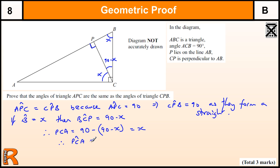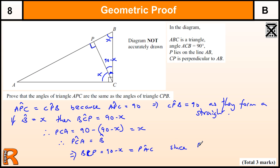Therefore, angle BCA equals the angle at B, which implies that angle BCP — this angle here, which is 90 minus X — is equal to angle PAC. Because since BCA equals X, both this angle and this angle are the same: this is 90 minus X, and this is 90 minus X, because we've shown these two are X, and these two are 90, so what's left is 90 minus X.